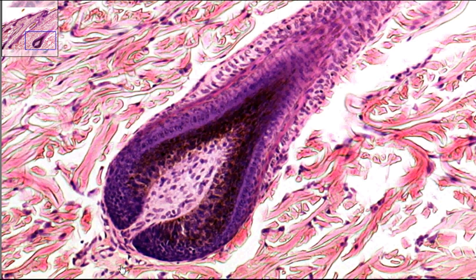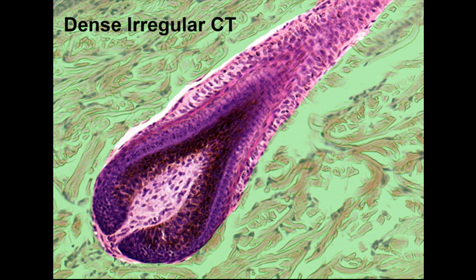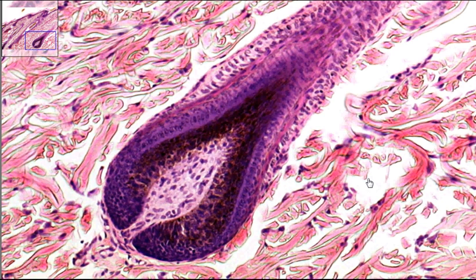Surrounding it, all this tissue — you can see it kind of looks haphazard out here. This is all dense irregular tissue. That means we're down in the dermis of the skin.